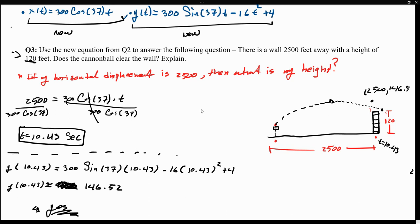I hope that was helpful. These were two small examples showing how we can use parametric equations. The most important thing is that x(t) will always give you the horizontal displacement and y(t) will give you the vertical displacement. We can use a combination of them to find time and answer questions regarding height or distance.